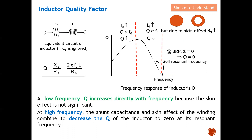Next I'm going to discuss the quality factor Q. For this, we use the equivalent circuit of an inductor while ignoring the distributed capacitor to keep the discussion simpler. The Q of a series resonator is governed by the equation Q = ωL / Rs = 2πfL / Rs. I have done a separate video deriving this equation — the link will be under the description. So the Q is the inductive impedance divided by Rs.